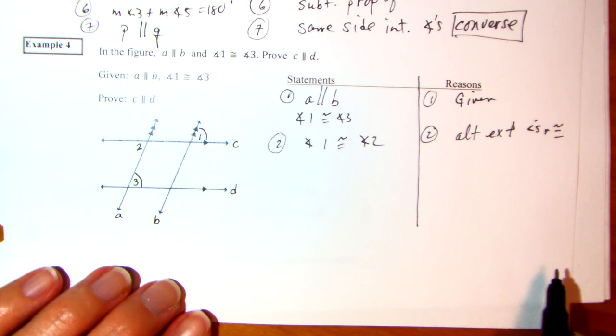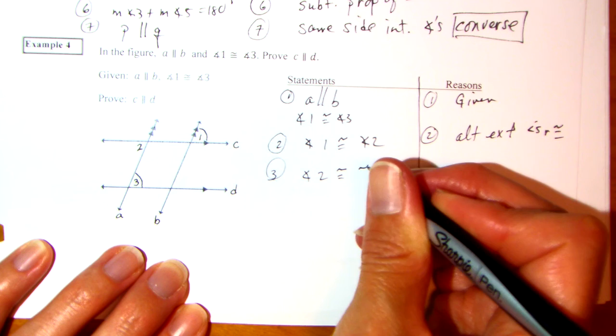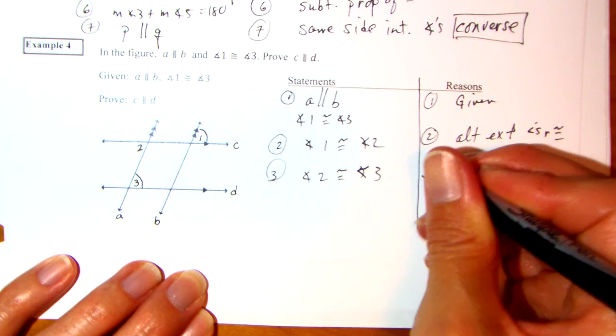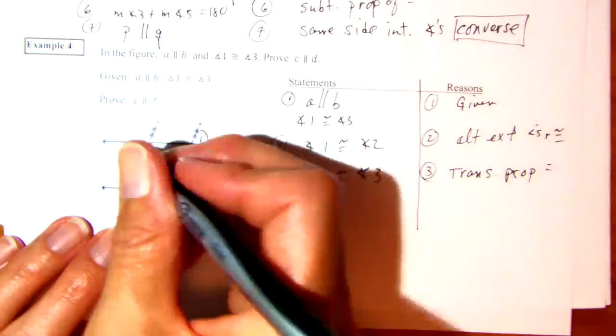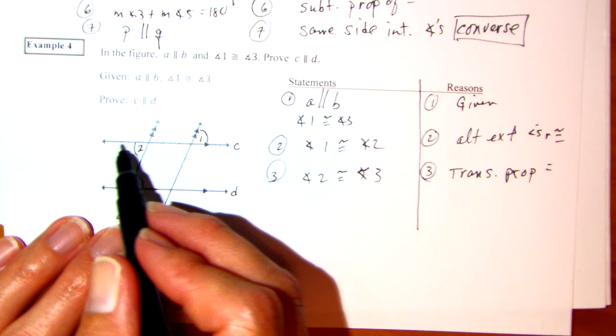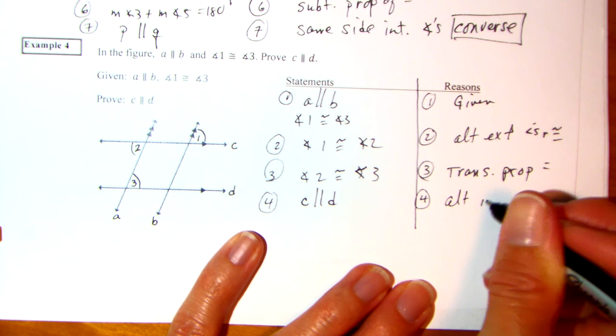Now, 1 is congruent to 3 and 1 is congruent to 2, so I know that 2 is congruent to 3. Why? This is transitive — transitive is like a substitution. If angle 2 is congruent to angle 3, those are alternate interior angles, then C and D are parallel. That's what we're looking for, because of the alternate interior angles converse.